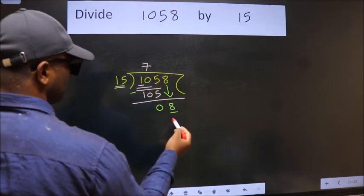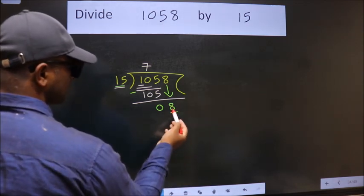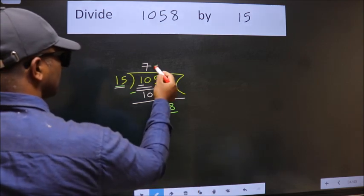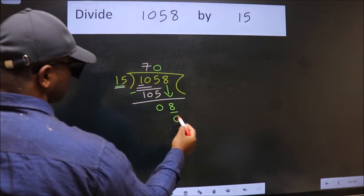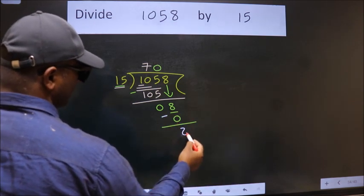If I take 1, we get 15. But 15 is larger than 8. So what we do is we take 0 here. So 15 times 0 is 0. Now we subtract. We get 8.